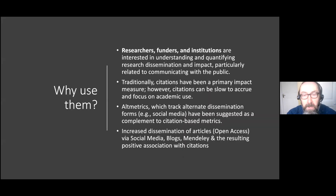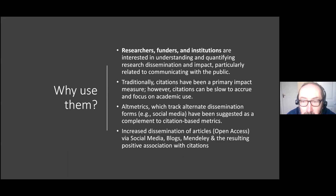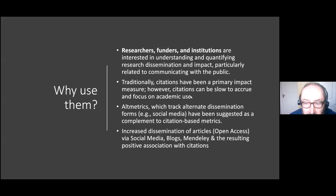If you have problems with content included in your profile, do contact us and we'll see what we can do. Why use altmetrics? Researchers, funders, and institutions are interested in understanding and quantifying research dissemination and impact, particularly related to communicating with the public. A researcher who provides funding can get immediate feedback on the impact of funded research. Traditionally, citations have been the primary impact measure, but they can be slow to accrue and focus on academic use.